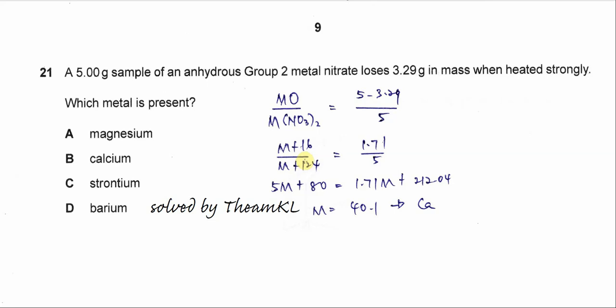Question 21. A 5 gram sample of anhydrous group 2 metal nitrate loses 3.29 gram in mass when heated strongly. Which metal is present?